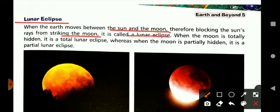When the moon is totally hidden, it is a total lunar eclipse, whereas if the moon is partially hidden, it is called a partial lunar eclipse.